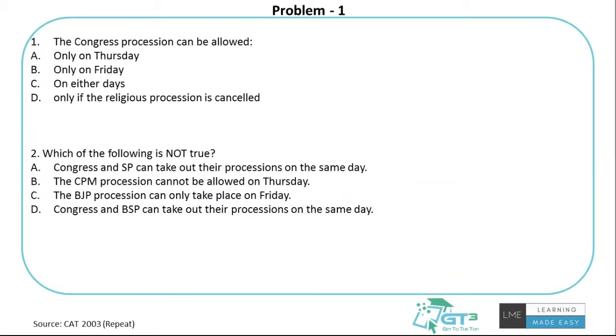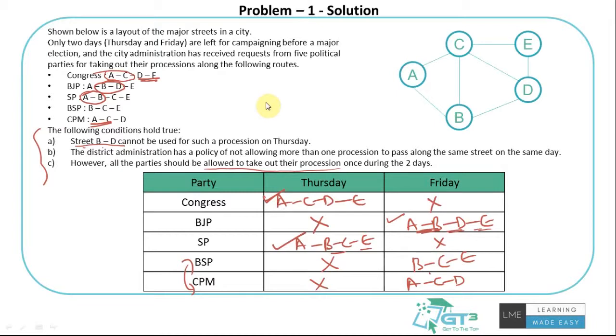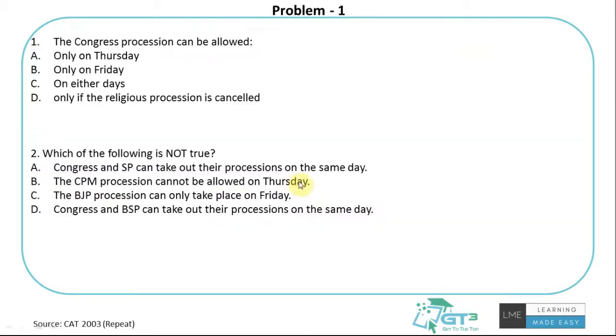Let's look at the questions. The Congress procession can be allowed: only on Thursday, only on Friday, on either day, or only if the religious procession is cancelled. Congress can do it on Thursday. So the answer is Thursday. They have to do it only on Thursday. They cannot do it on Friday or on either of the days. So they can do it anyway. Option D is an irrelevant option.